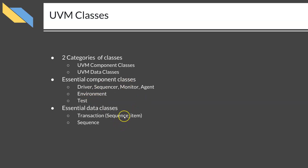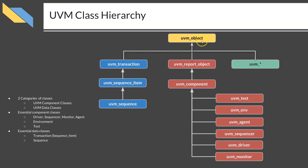Before explaining all of them in detail, let's have a quick look at the UVM class hierarchy. The most basic class in UVM is named UVM object. Strictly speaking, the very basic class is called UVM root, but you can consider UVM_object as the base class for all other classes in UVM. Remember that UVM_object is a class definition itself, not an object.